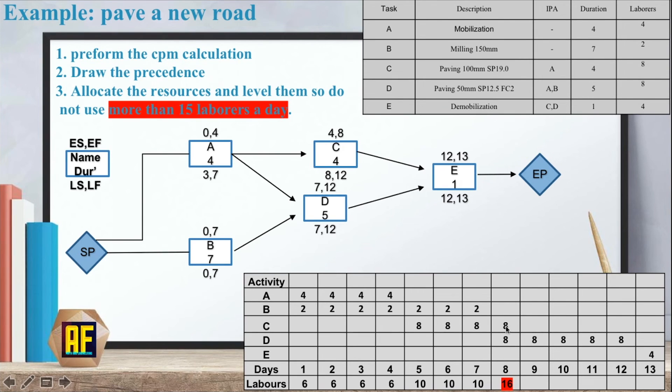We need to allocate this resource. It means that we either need to move activity C or activity D somewhere. So we won't have more than sixteen labors. But let's first finish the calculation. So in the ninth day we have eight workers. Ten day eight. Eight. Eight. And four.